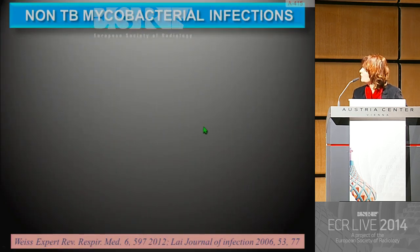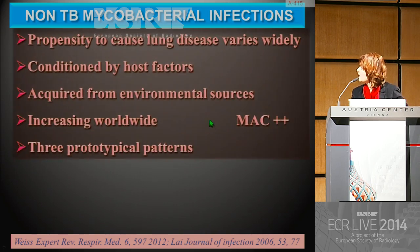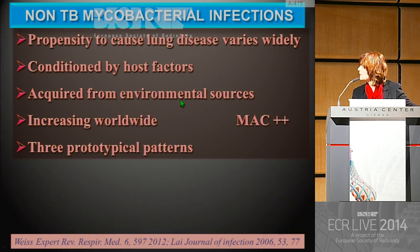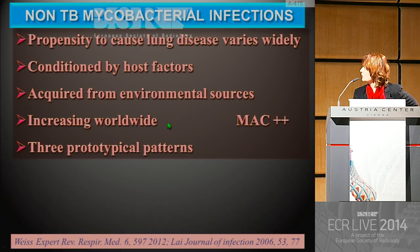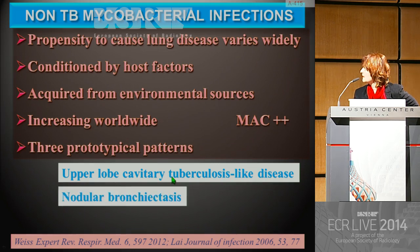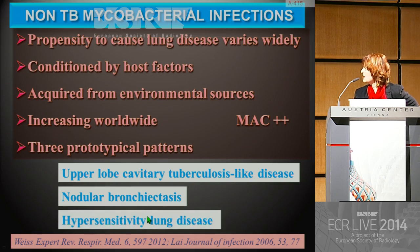Now we move on to non-TB mycobacterial infections. There is a propensity of non-TB mycobacteria to cause lung disease, and there is great variation, mostly conditioned by host factors. These infections usually occur from environmental sources including soil and water, and are increasing worldwide, especially Mycobacterium avium complex. Three main prototypical patterns may be seen: upper lobe cavitary tuberculosis-like disease, nodular bronchiectasis, and hypersensitivity lung disease.